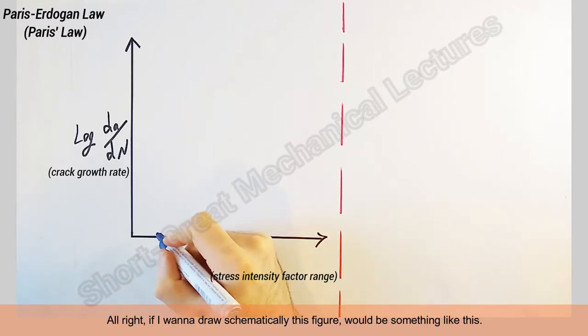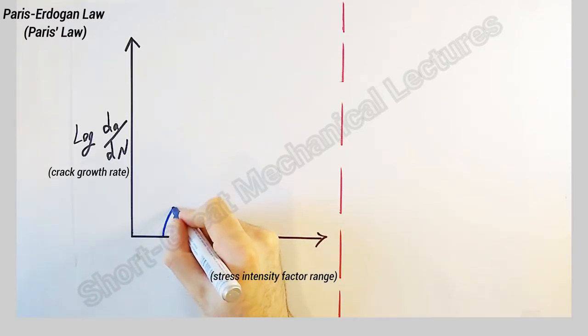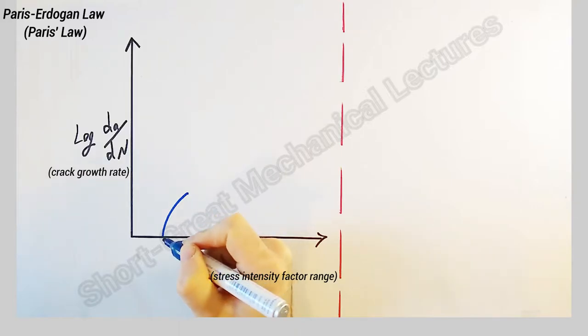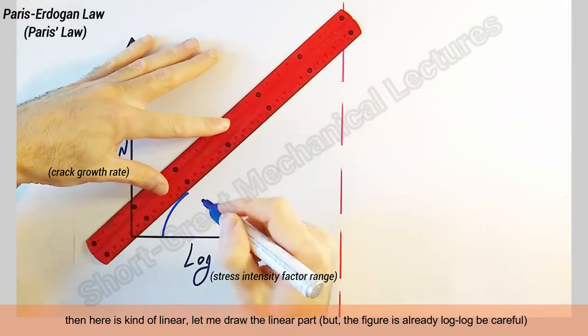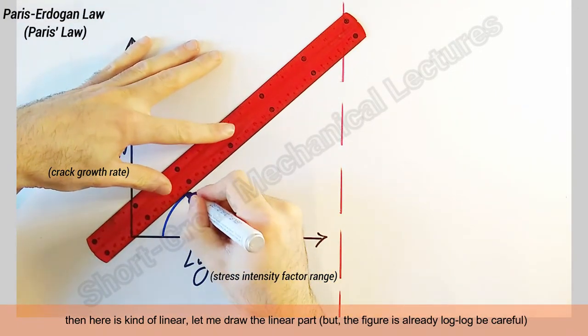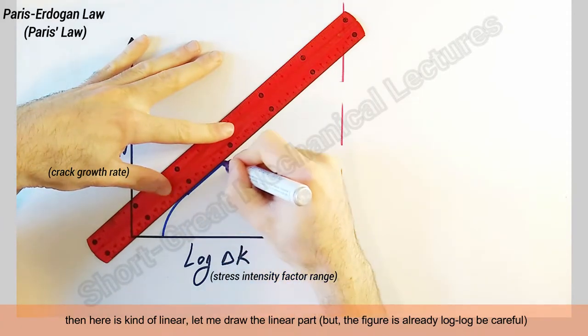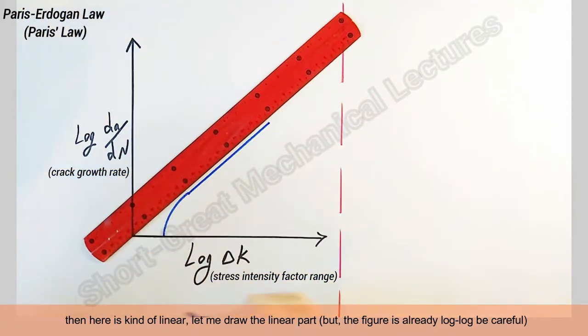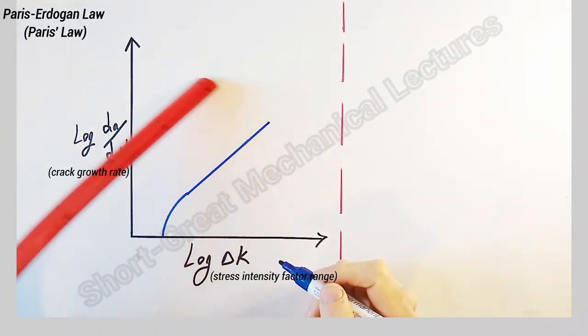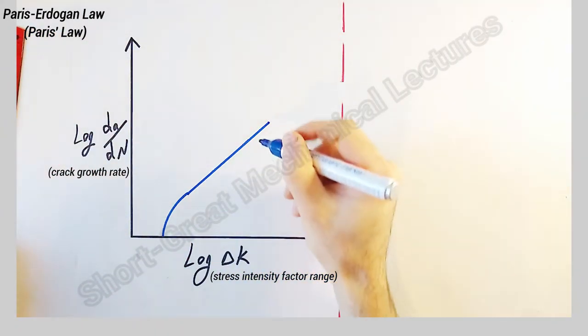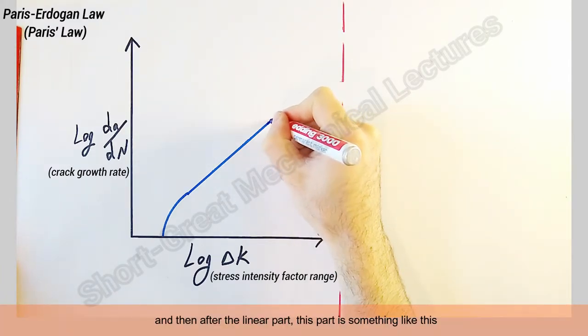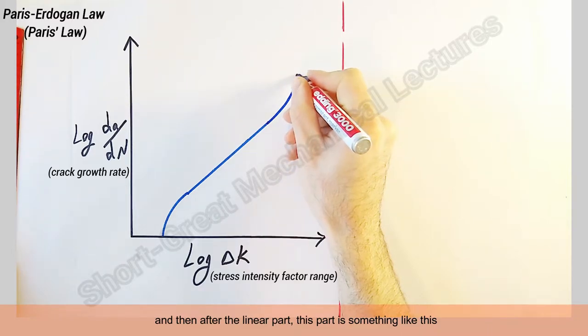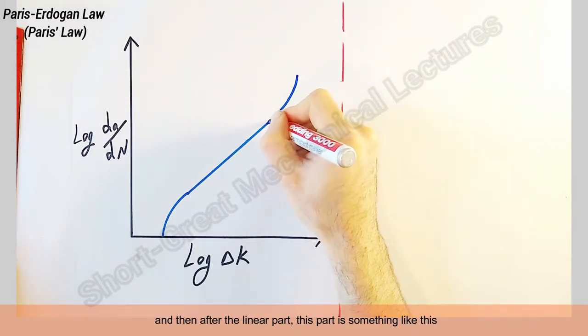If I want to draw schematically, this figure would be something like this. This part is like that, and then here is kind of linear. Let me draw the linear part. The figure is already log-log, be careful. This part is linear.